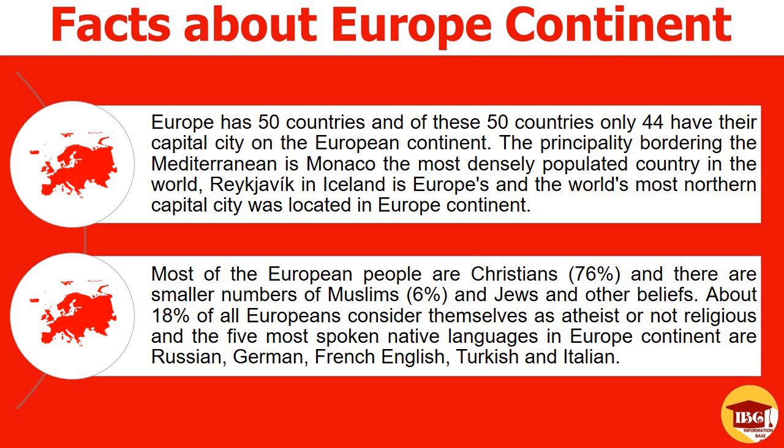The continent of Europe was the third continent in the world. Europe has 50 countries, and of these 50 countries only 44 have their capital city on the European continent. The principality bordering the Mediterranean is Monaco, the most densely populated country in the world. Reykjavik in Iceland is Europe's and the world's most northern capital city. Most of the European people are Christians, 76%, and there are smaller numbers of Muslims, 6%, and Jews and other beliefs. About 18% of all Europeans consider themselves as atheist or not religious.